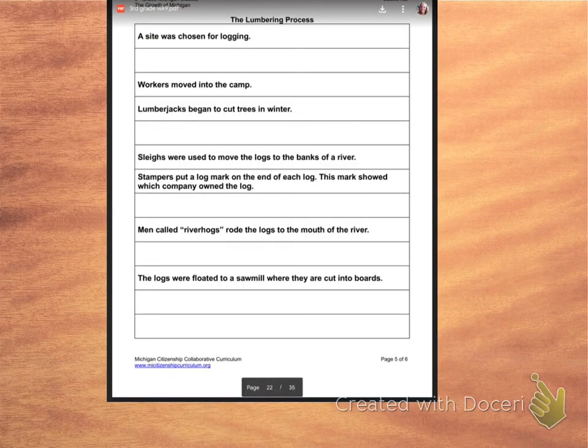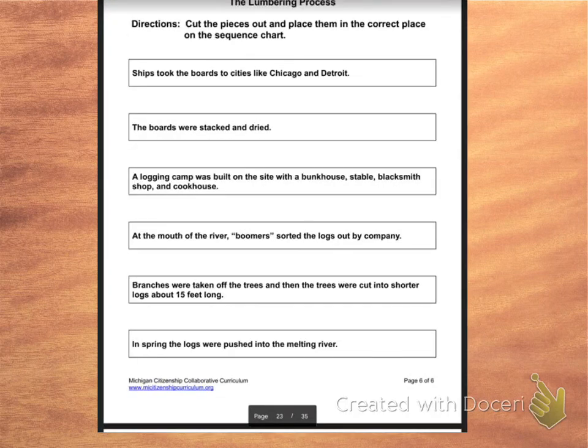So like before, they gave you the steps in the process answer kind of thing before you actually had the work portion to do. So this is talking about the lumbering process, and this is really the answer key for you. So if you look at the next page, they have these all kind of mixed up. So here is the actual page where you might want to cut these apart and then put them in order or sequence them. The answer key was the one I showed you before, and I think that came first in your packet also.